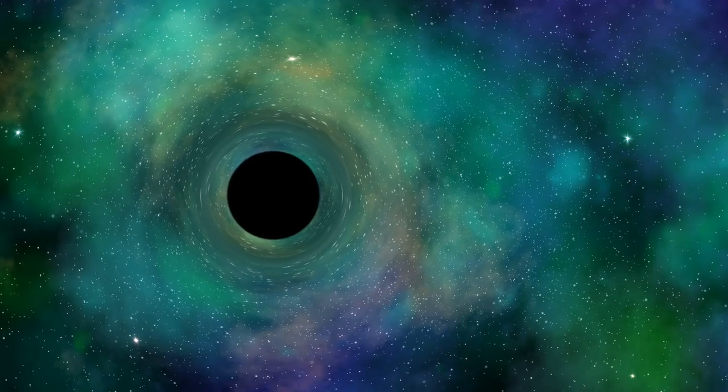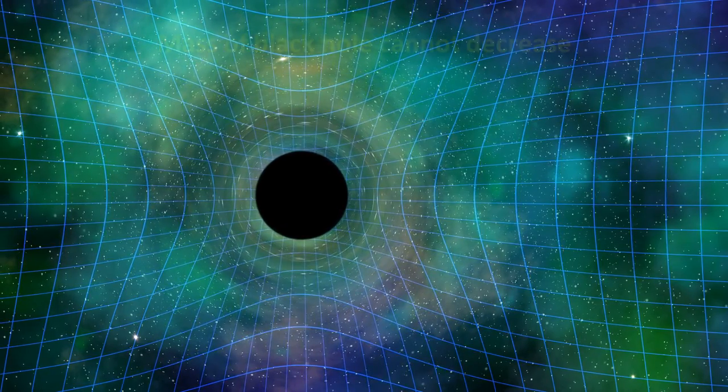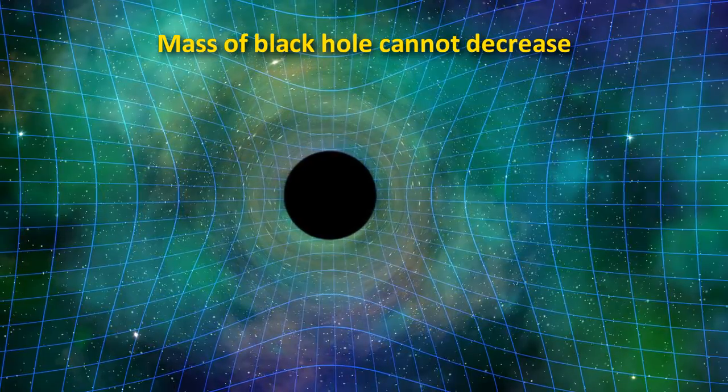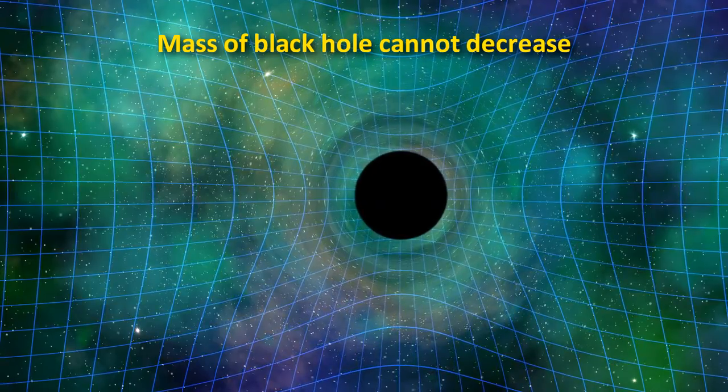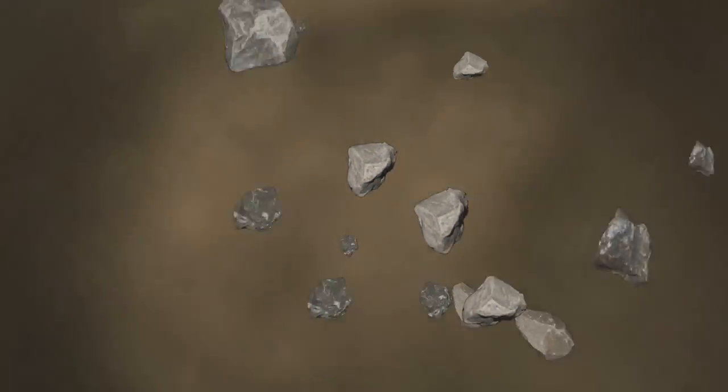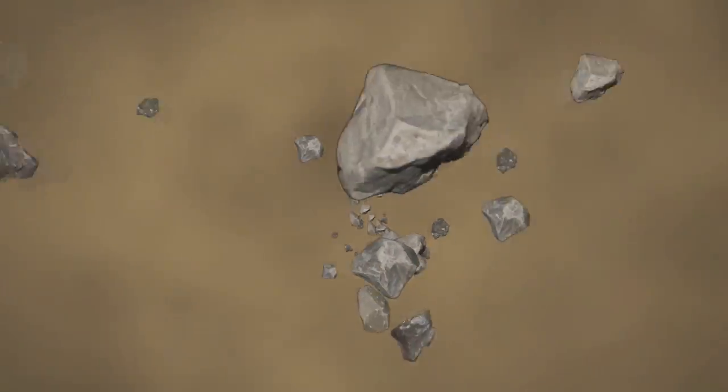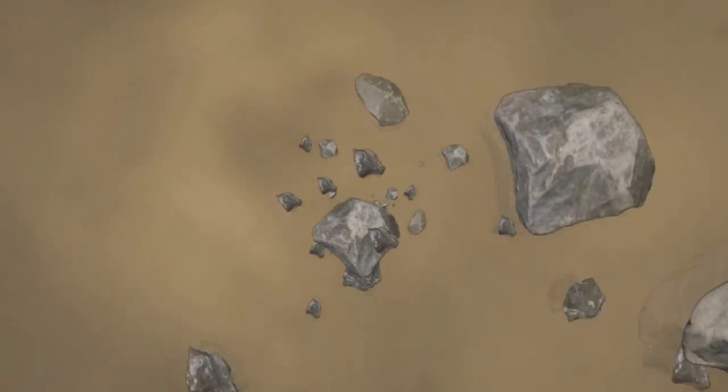The gravity around a black hole is so strong that it had been thought that nothing could escape from it, including light. If we ignore quantum mechanics, then in classical physics, the mass of a black hole cannot decrease. It can either stay the same or get larger, because nothing can escape a black hole. But things can fall in, so it can gain mass that way.